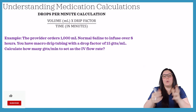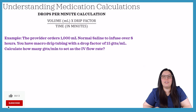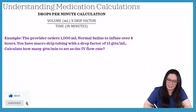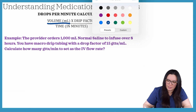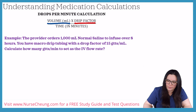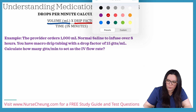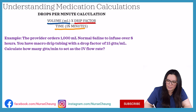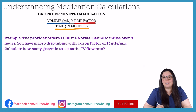In order to do IV drip rate calculations, we use the drops per minute calculation, and that is our volume in mL times our drip factor over our time in minutes.